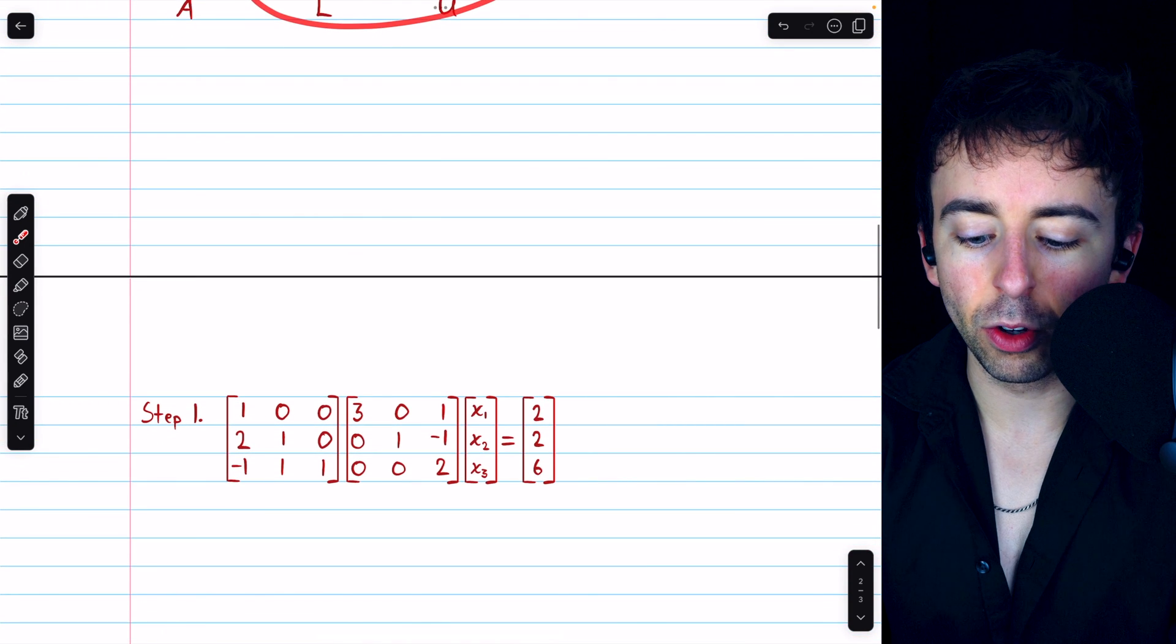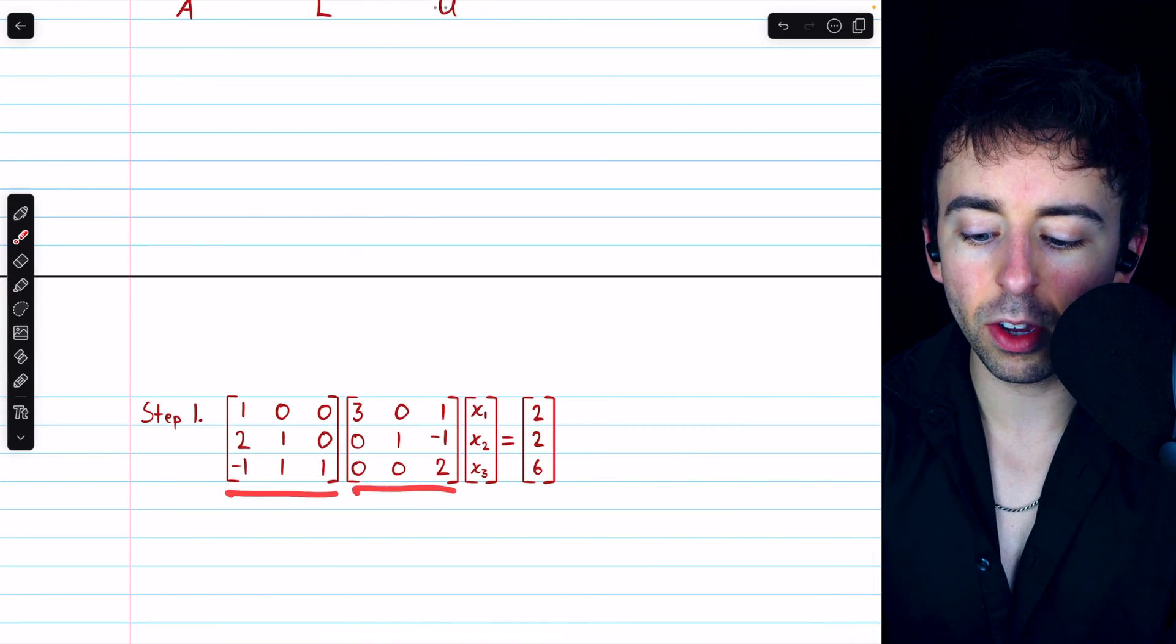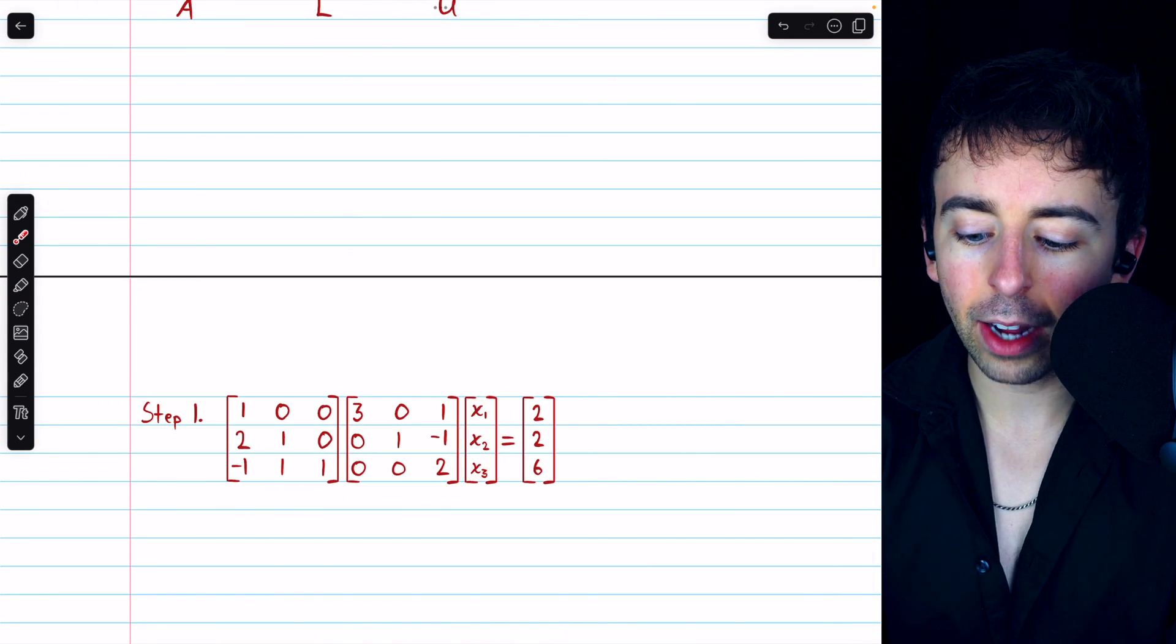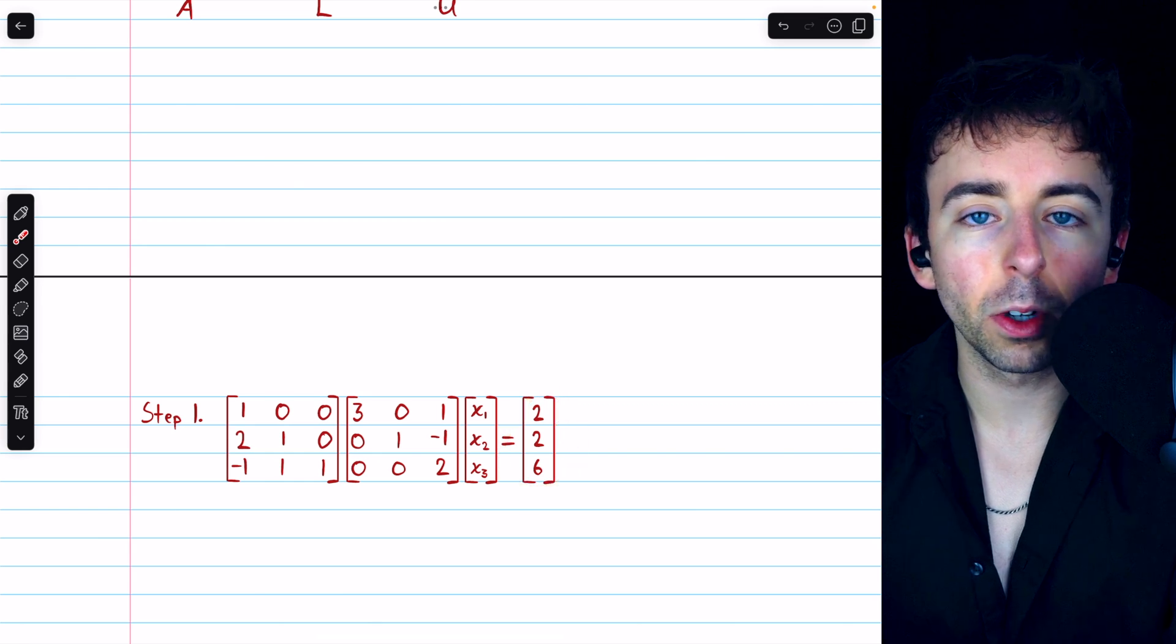Thus, we arrive at this new equation, L times U times the variable vector X equals that column vector of constants.